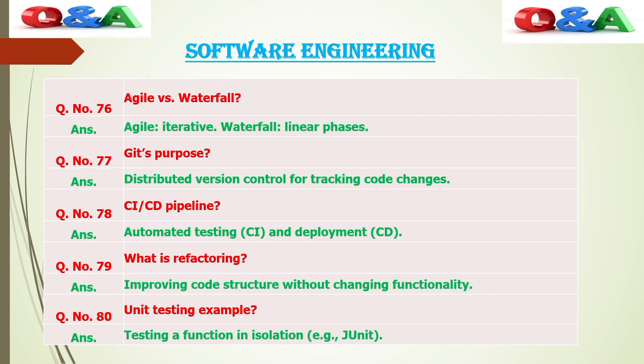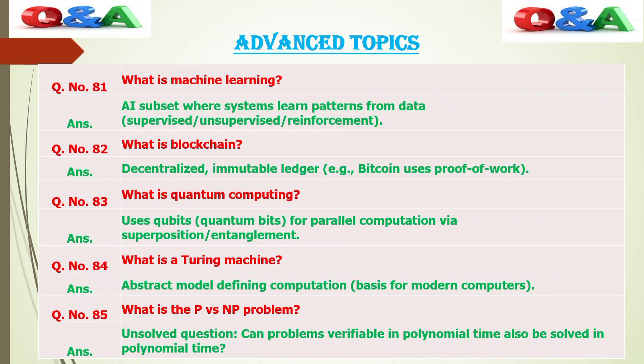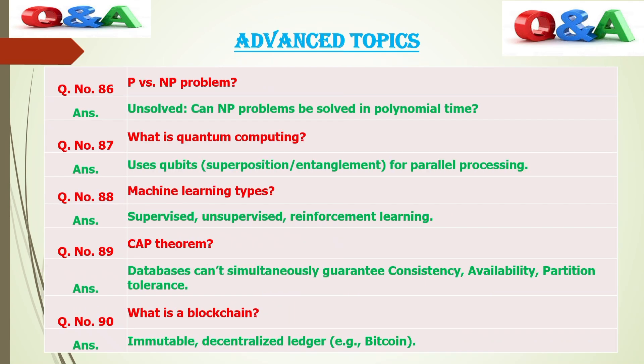Advanced topics in computer science — definition: advanced topics build upon fundamentals and explore specialized, cutting-edge areas such as artificial intelligence and machine learning (neural networks, NLP, deep learning), cybersecurity (cryptography, ethical hacking), blockchain, cloud and distributed computing (AWS, Kubernetes, microservices), and quantum computing (qubits, superposition, quantum algorithms).